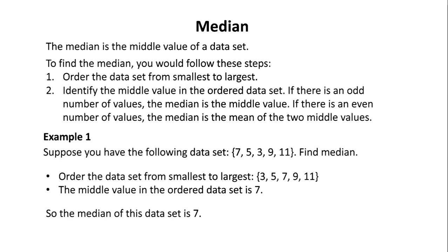Median. The median is the middle value of a data set. To find the median, you would follow these steps. First, order the data set from smallest to largest. Second, identify the middle value in the ordered data set. If there is an odd number of values, the median is the middle value. If there is an even number of values, the median is the mean of the two middle values.